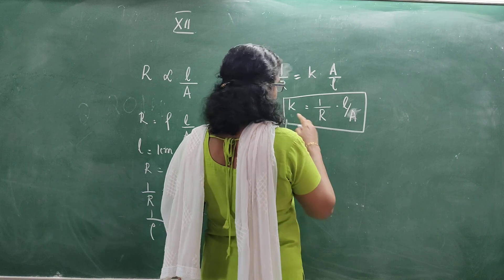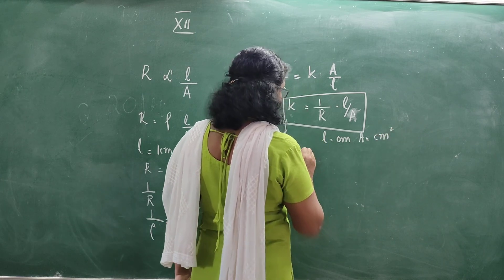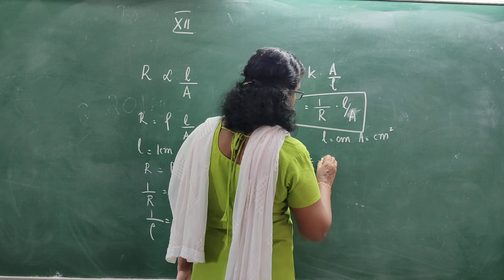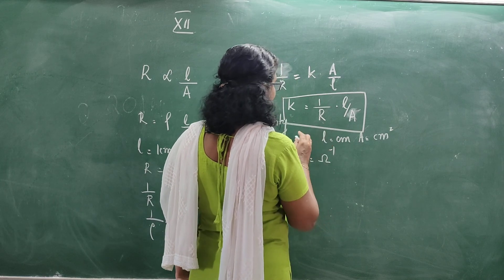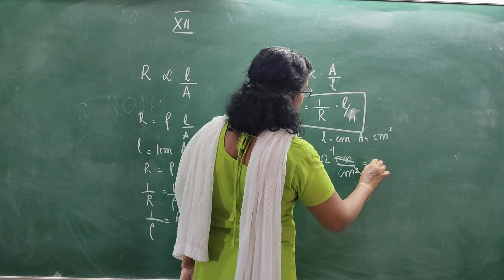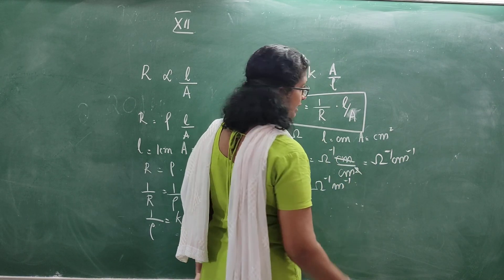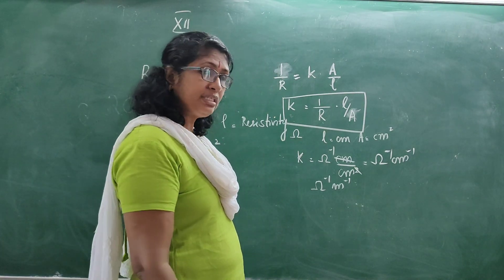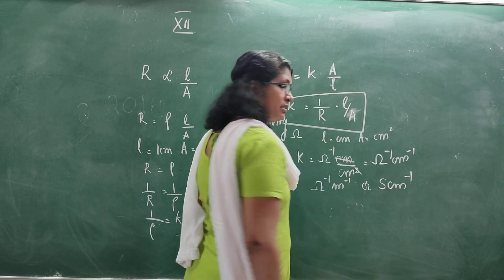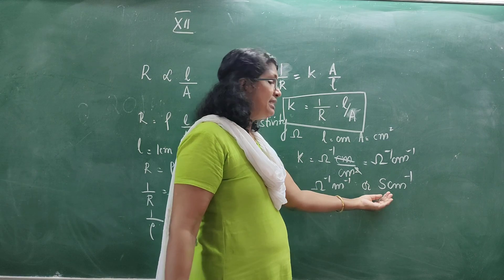Now what is the unit of conductivity? If length L is in centimeters and area is in centimeter square, then the unit for K (conductivity) is ohm⁻¹ centimeter⁻¹, or ohm⁻¹ meter⁻¹ in the SI system. Ohm inverse is also called siemens, so the unit for conductivity is siemens centimeter⁻¹.